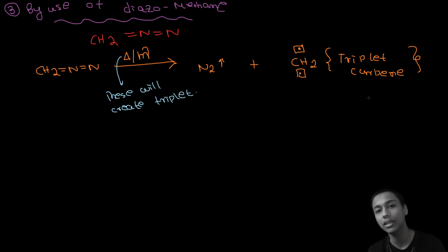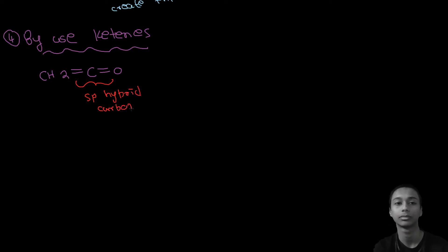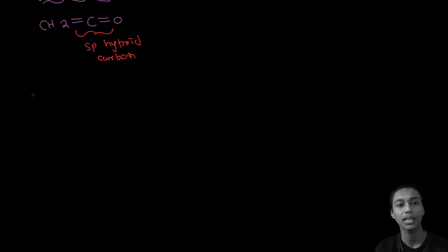So these were the three methods of creating carbenes. There is one last method which uses a compound with a strange name, yet a familiar one. Its name is by use of ketenes. Just like ketone, ketene. This is a bit confusing name. So let me explain it first. What is ketone? Of course you know what ketone is. Ketone is something like this. Now what is ketene? Ketene is a molecule in which this group is present: this type of SP hybrid carbon is present.